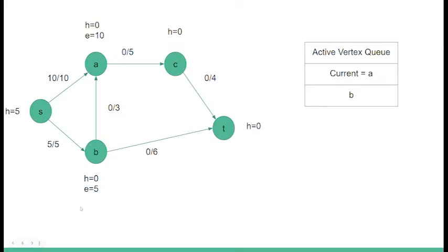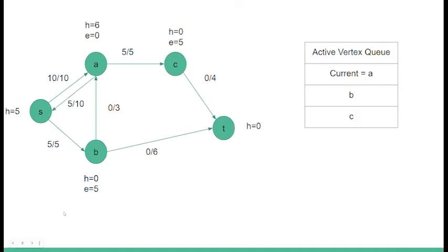We will now look at node A. We begin by sending five of the capacity at A to C, and we must relabel node A to have a height of one, since A must have a greater height than C in order to send flow to it. After we've sent five from A to C, we still have an excess of five in A with no other edges exiting A, so we must send five back to the source. Now that there is an excess of zero in A, we can remove it from the active vertex set.